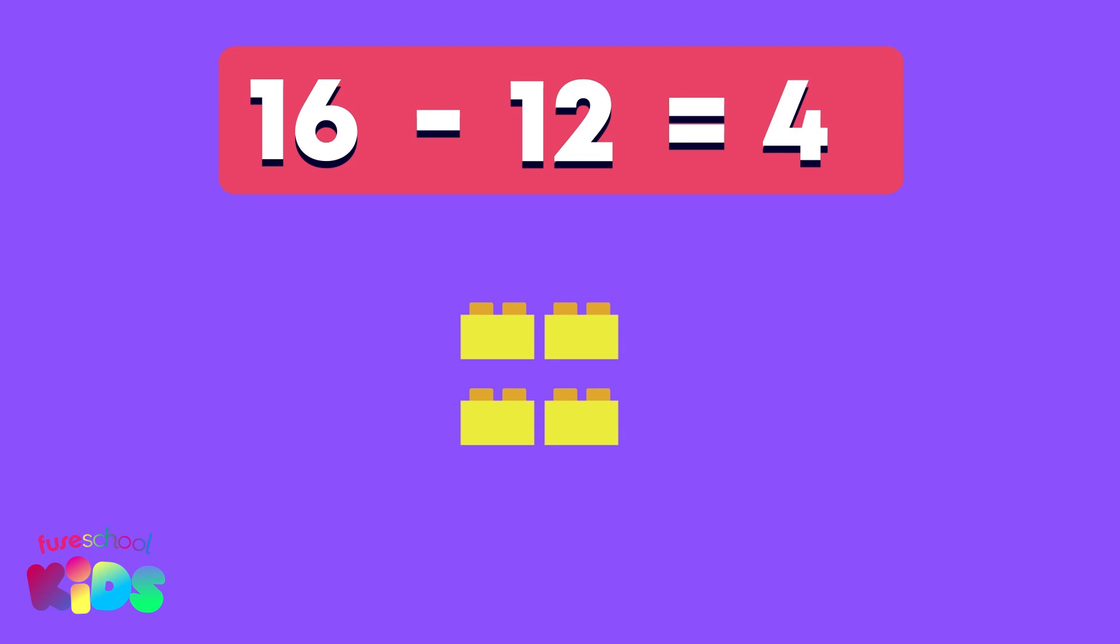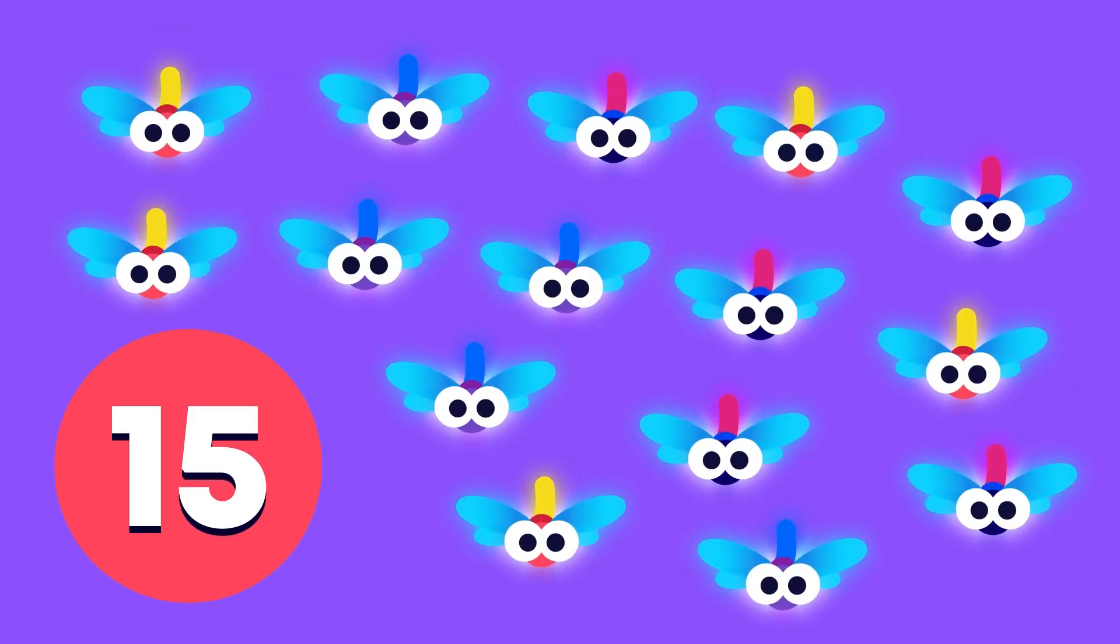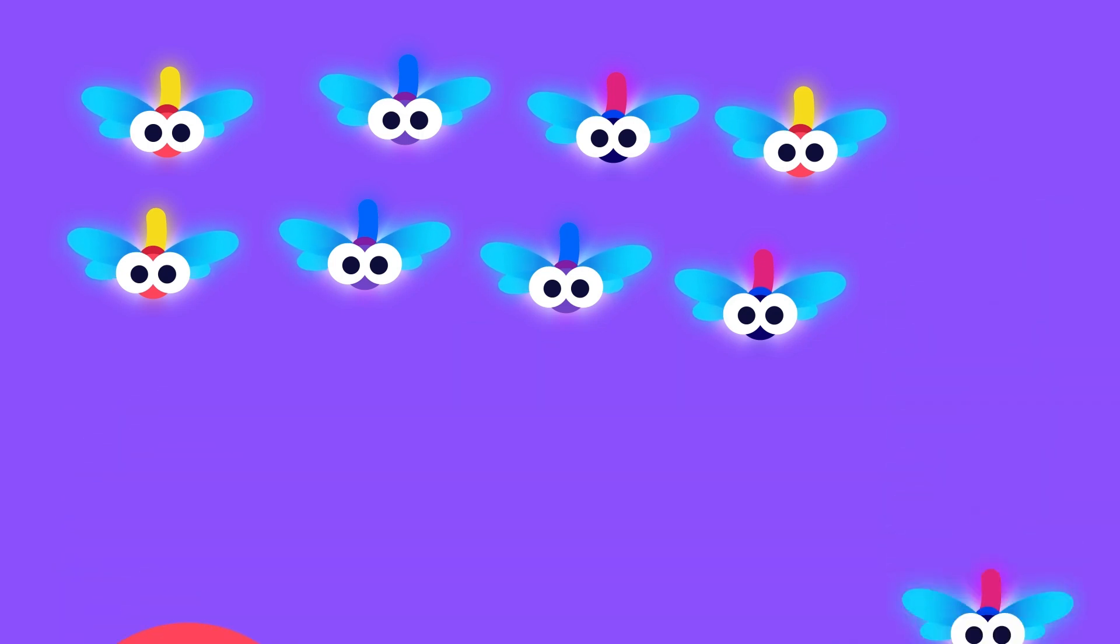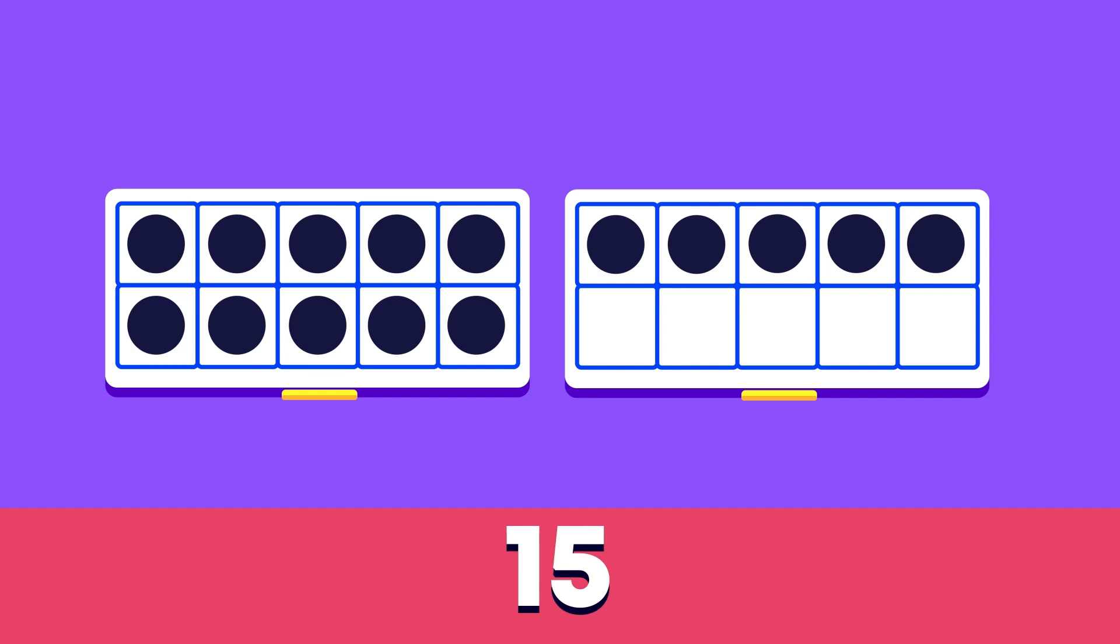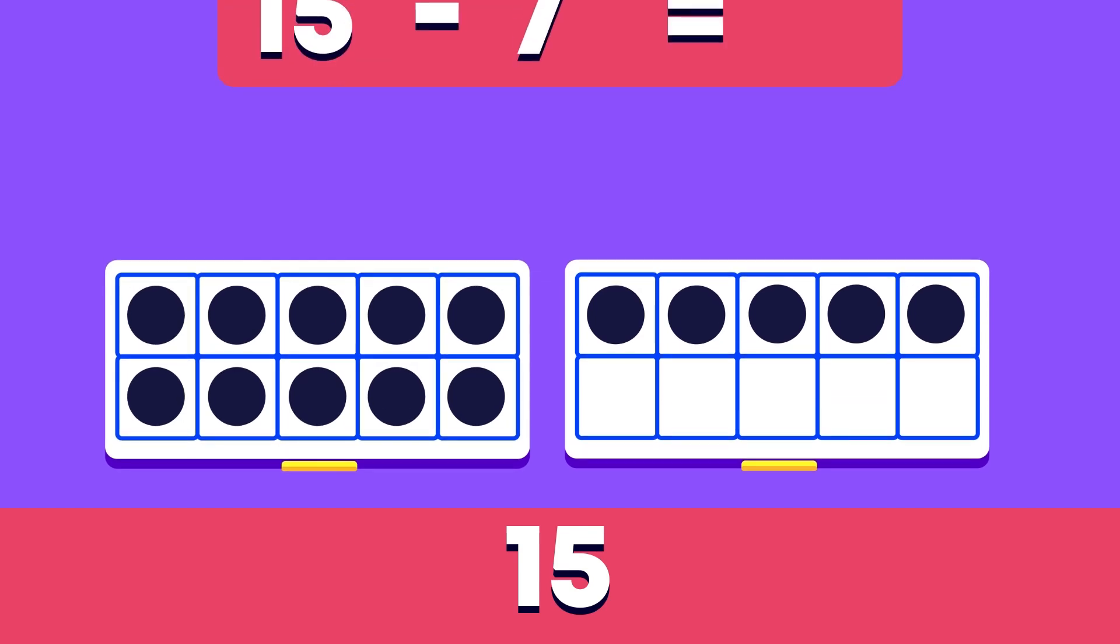Super subtracting everyone. Look at the 15 shiny dragonflies. Oh no, 7 flew away. Let's use the tens frame again to help us work out 15 minus 7.